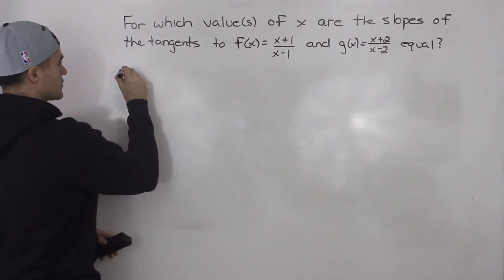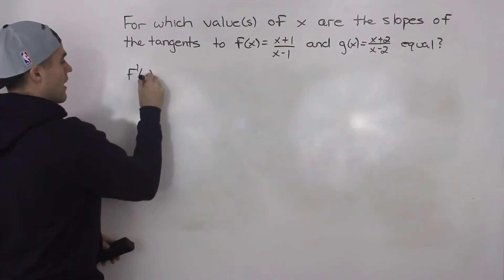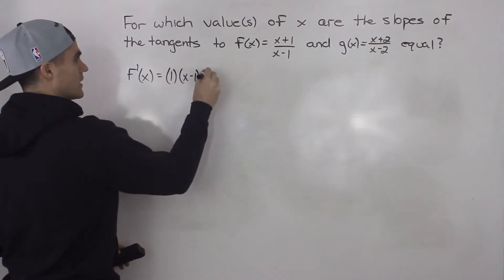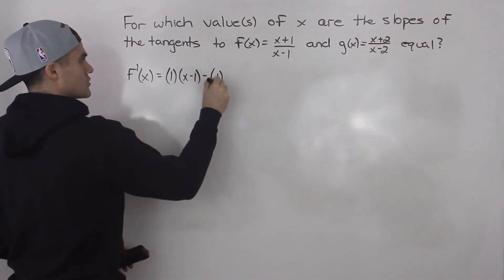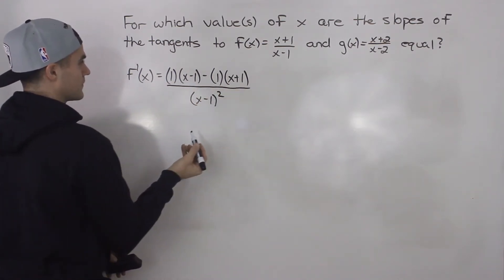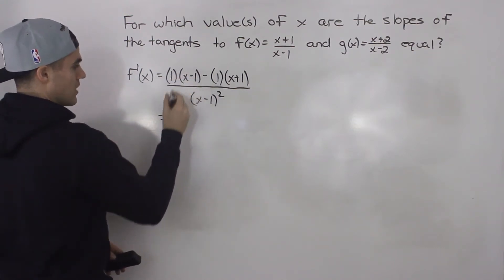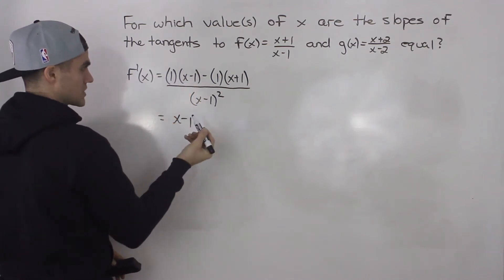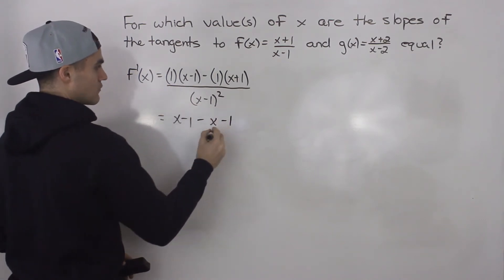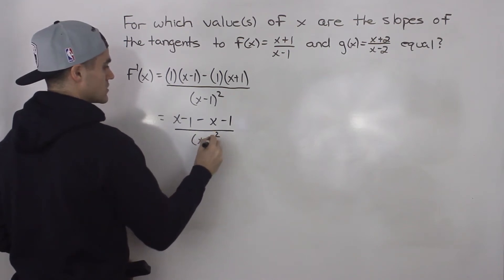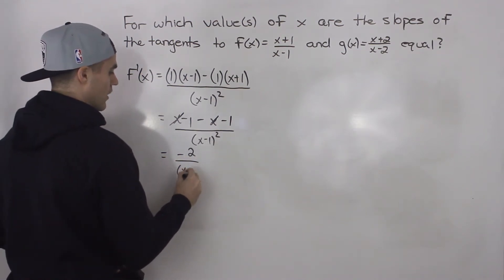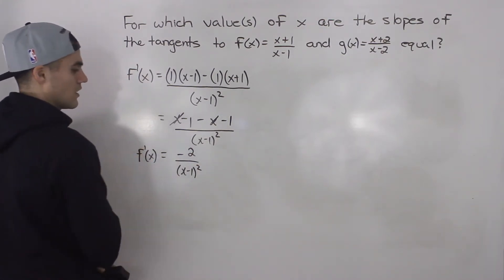We can find the derivative of both functions. Starting with f(x), using the quotient rule: f'(x) equals the derivative of the top times the bottom minus the derivative of the bottom times the top, all over the bottom squared. Simplifying the numerator, the x's cancel out, and this simplifies to negative 2 over (x-1) squared. That's the derivative of f(x).